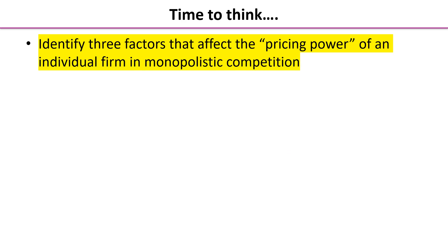That is the graph for the short run, and that rather implies that something changes in the long run. I'm going to ask you to think about what adds to the pricing power that an individual firm has in monopolistic competition, and what might reduce their pricing power.